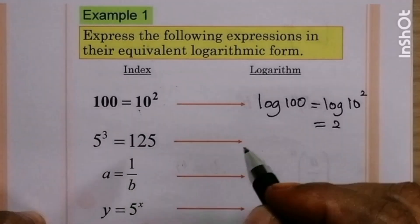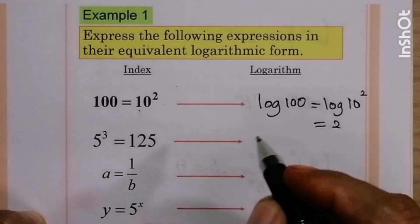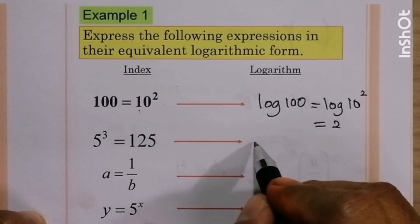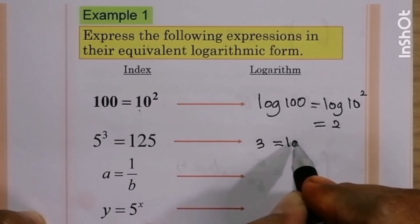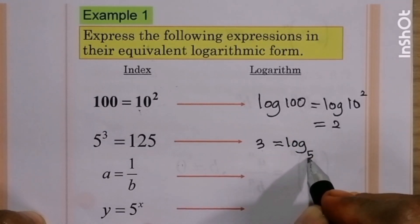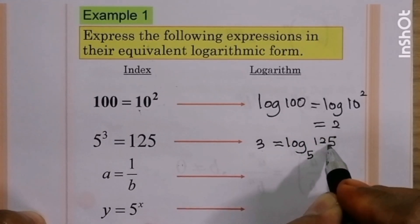5 cube equal to 125. Then we taking log both sides, we get 3 equal to log base 5 of 125.